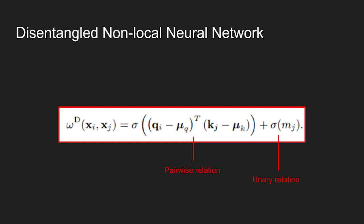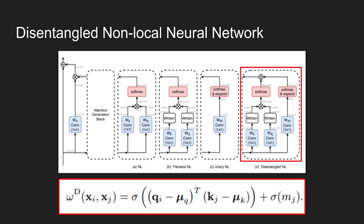The first term in the equation now captures the pure pairwise relation between query pixel i and key pixel j, and the second term captures the unary relation. The resulting equation is also shown as a figure. Note that it adopts a single value transform for both pairwise and unary terms, which is similarly effective on benchmarks as using independent value transform, but with reduced complexity.